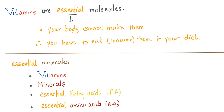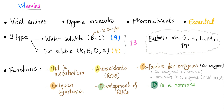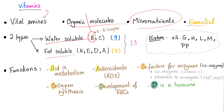As you know from previous lectures, vitamins are essential molecules. Your body cannot make them, therefore you have to eat them in your diet. The essential molecules include vitamins, minerals, essential fatty acids, and essential amino acids. The name vitamin came from 'vital amines' — that's a wrong name. They are organic molecules, micronutrients, essential, water-soluble, and fat-soluble. The B vitamins are water-soluble, and today's topic involves B1, which is thiamine, as well as B7, which is biotin.